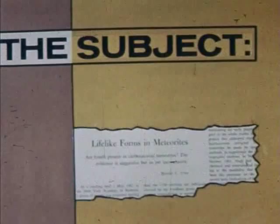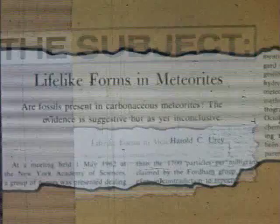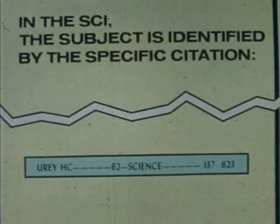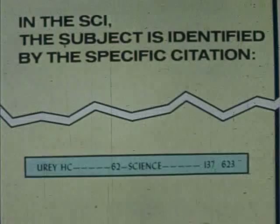Consider the subject, 'Lifelike Forms and Meteorites,' as discussed by Harold Urey in 1962 in Science. In the citation index system, this subject is represented by the symbol: H.C. Urey, Science, 137-623-1962. And whenever you wish to search this specific topic, look for this symbol in the citation index. If anything has been published subsequently, it will be listed there.